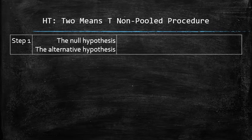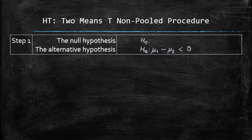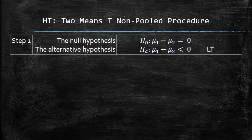Since our claim, mu1 minus mu2 less than 0, is in the form of an inequality, we set it up as the alternative hypothesis. Therefore, the null hypothesis, which is always in the form of an equation, must be mu1 minus mu2 equals 0. So the test is left-tailed. Step 1 is complete.